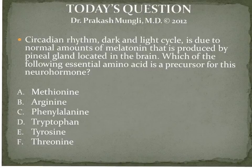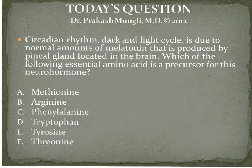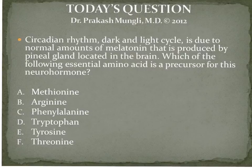Hey everyone, this is Dr. Mungle here. Today's question is about circadian rhythm — the dark and light cycle due to normal amounts of melatonin produced by the pineal gland located in the brain. Which of the following essential amino acids is a precursor for this neurohormone? So basically, the question is asking which essential amino acid is responsible for the synthesis of melatonin.